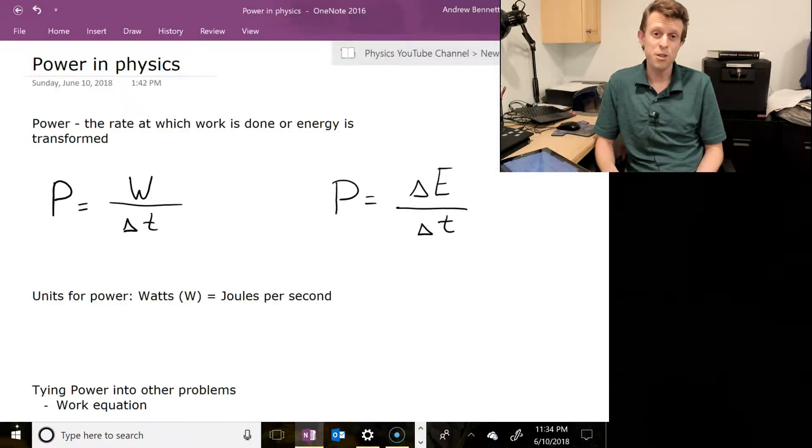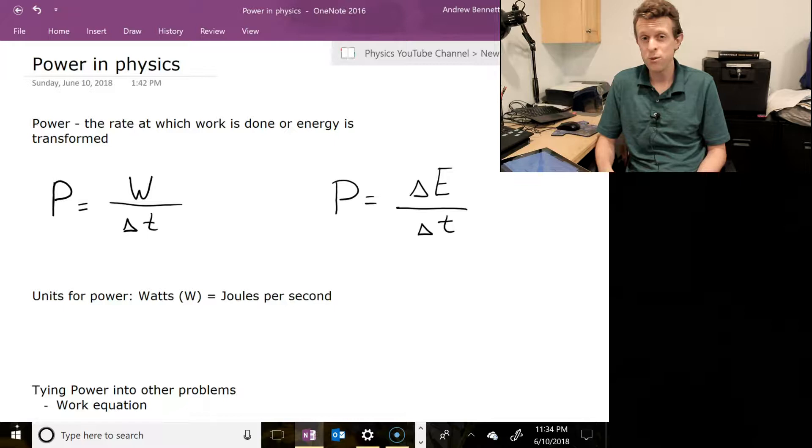Our definition in physics for power is the rate at which energy changes from one form to another, or energy is transferred from one object to another, or work is done by one object onto another. So it's how rapidly each of those things happens.